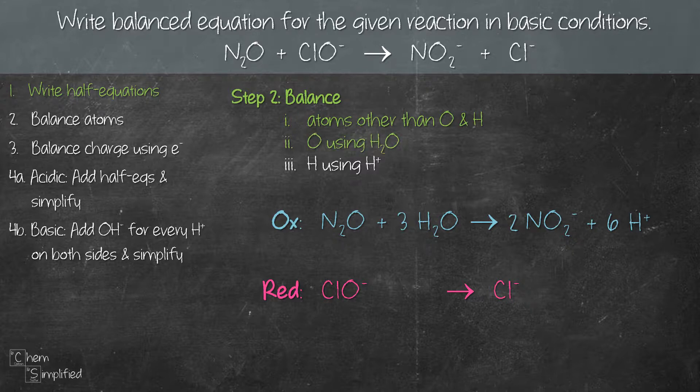On the left hand side we have 1 O and on the right hand side we don't have any O, so we add 1H₂O on the right hand side. Because we added 1H₂O on the right hand side, we now have 2H on the right hand side but no H on the left hand side, so we balance that by adding 2H⁺ on the left hand side. With that we're done with step 2.